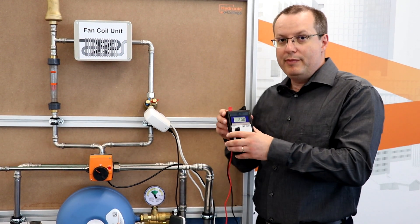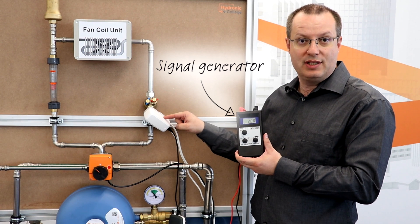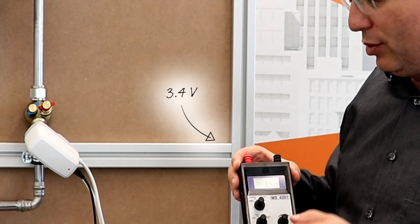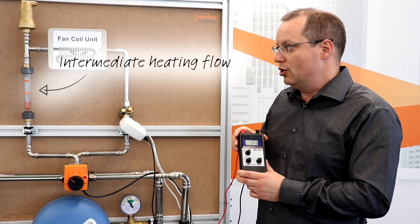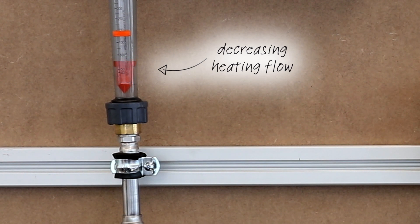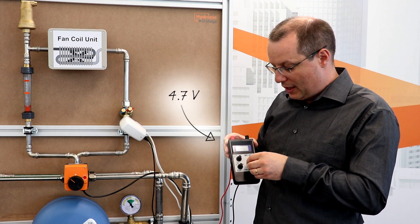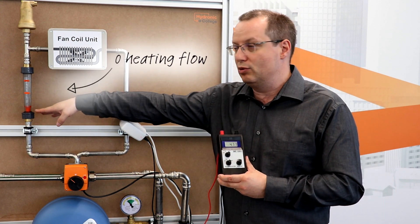I am now going to operate the changeover system. I'm making use of a signal generator to provide a 2 to 10 volt signal to the TA slider 160 plus actuator. If I increase the voltage to about 3.4 volts, we can see that the actuator is proportionally controlling the flow so that we get to intermediate values. The higher I increase the voltage to the slider actuator, the less flow I will get — up to a value of 4.7 volts where we should get basically no heating flow. Going to 4.7 volts just like here, you can see indeed that we get to zero flow in heat.